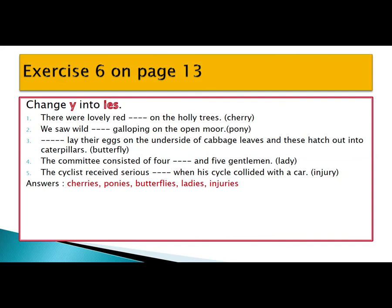Now children, let's do some practice — exercise six on page 13, five sentences. Number one: 'There were lovely red ___ on the holly trees.' The missing word is cherry, which ends with Y, so the answer is cherries — Y changes to I and ES is added: 'lovely red cherries on the holly trees.' Number two: 'We saw wild ___ galloping on the open moor.' A moor is a green valley.